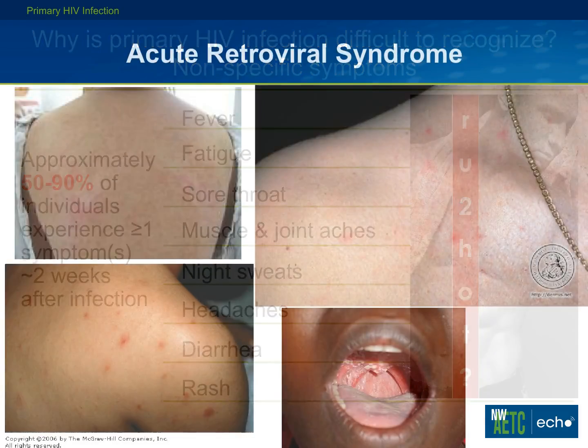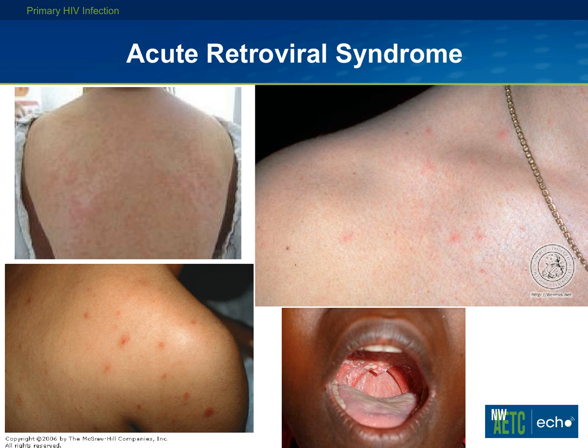Let me show you some pictures of the rash that may be associated — a nonspecific maculopapular rash. In the lower right corner I'm showing a picture of thrush, because people with acute HIV infection can have very low CD4 counts and very high viral loads. Sometimes they'll present with oral candidiasis or even other opportunistic infections. We've seen people drop their CD4 counts as low as around 50 during acute HIV infection.